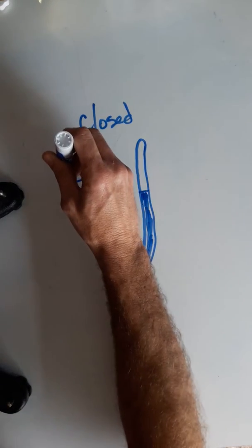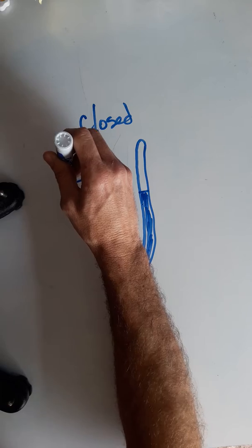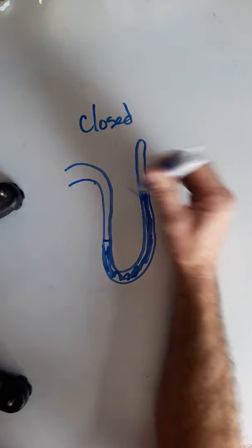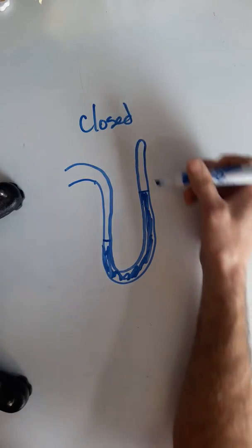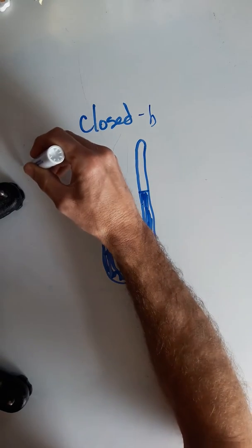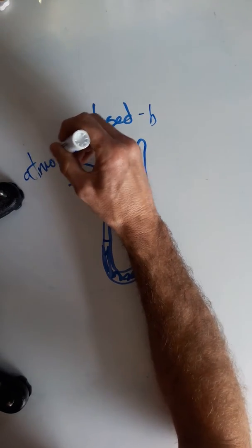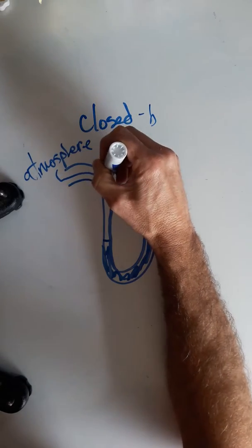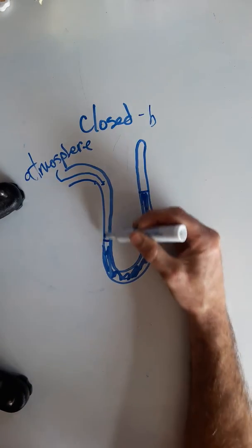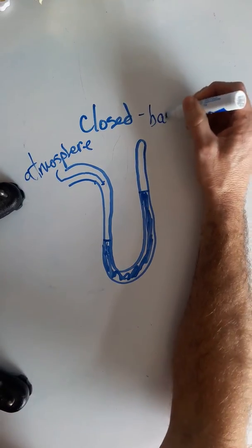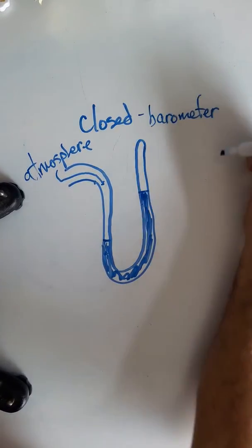You can have this connected to either a gas chamber or you can have it open to the atmosphere. If it's open to the atmosphere, this would be an example of a barometer. We just have atmospheric pressure here that is pushing, putting that force onto the area of the mercury, the liquid mercury barometer.